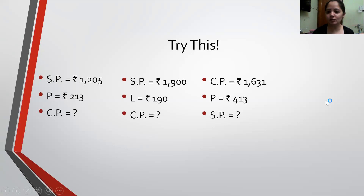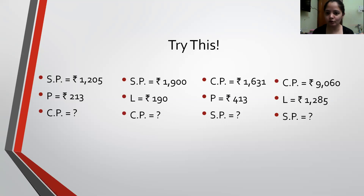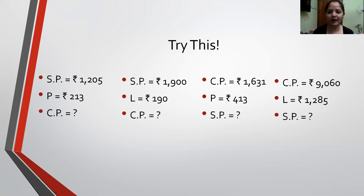The third problem: Cost Price is Rs. 1,631 and Profit is Rs. 413 — find the Selling Price. The fourth problem: Cost Price is Rs. 9,060 and Loss is Rs. 1,285 — find the Selling Price.